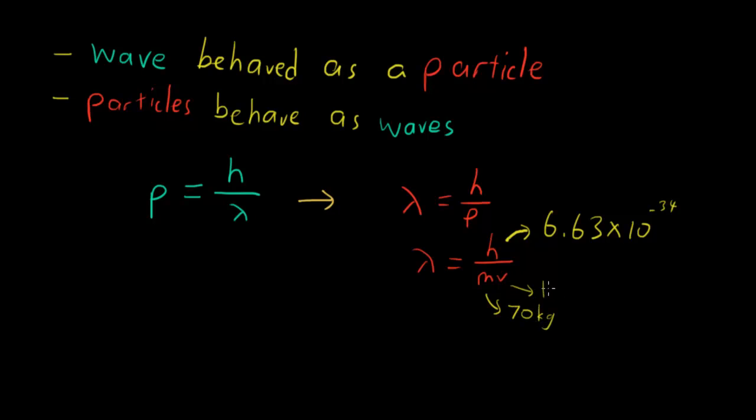This would mean that our wavelength would be something to the 10 power of negative 34, and that is a really small number. That's why we don't see ourselves as having a wavelength. We see ourselves as being a particle because the wavelength that we ought to perceive is really small - we can't even see it.